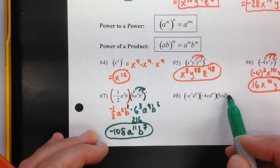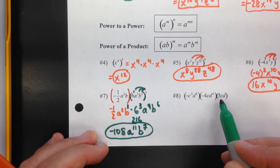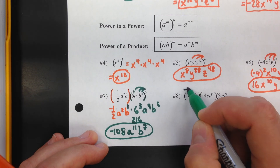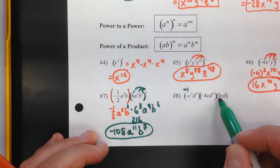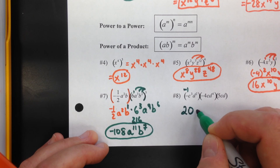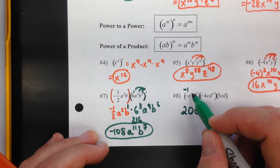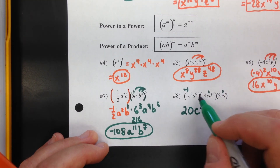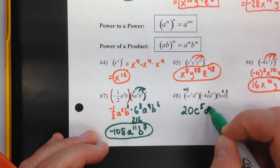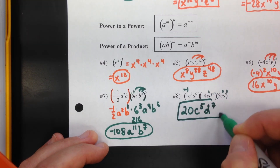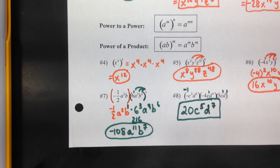For example 8, there are no outside exponents, so just multiply everything together. Start with the coefficients: think of the negative sign as negative 1, so negative 1 times negative 4 times 5 equals positive 20. For the variables: c to the third times c to the first times c to the first gives c to the fifth; d to the second times d to the fourth times d to the first gives d to the seventh. Final answer: 20c to the fifth d to the seventh. That's the end of the front of the notes — flip it over for the second part of the video.